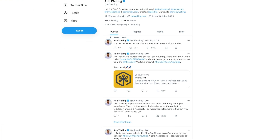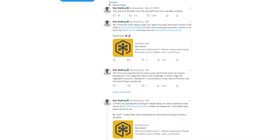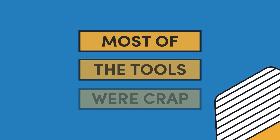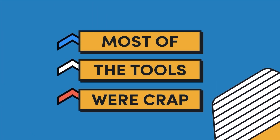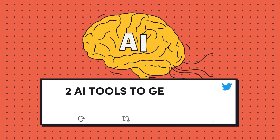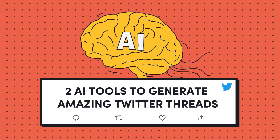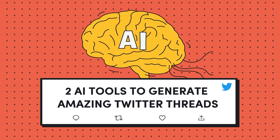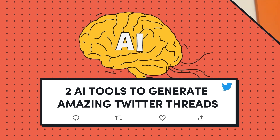After scouring the internet for AI tools that could help repurpose the content I'm already creating into full Twitter threads that communicate all or most of the message of the audio or video, I found there are a lot of crappy tools. There's a lot of tools that don't do a good job of it, even though they advertise that they do. But I did find two tools that when I chained them together, cut out a huge amount of the manual work that I would otherwise be doing to create amazing Twitter threads.